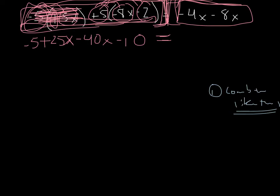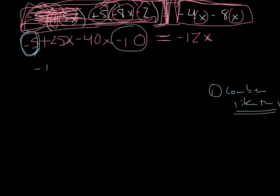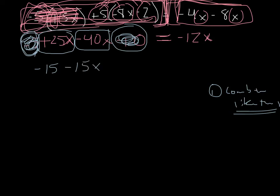Our first thing is simplify everything and then combine like terms. So what we do is take negative 4x and subtract 8x — it would be negative 12x. Now we combine like terms. Take this negative 5 and see what we can mix it up with. We can only combine it with regular numbers — it can't have an x in it. So, negative 5 minus 10 is negative 15. Mark them out so you know that you've used them. Next, take positive 25x — you can only combine it with terms that have x's. 25x minus 40x would be negative 15x, because we're just doing 25 minus 40 and keeping the x.